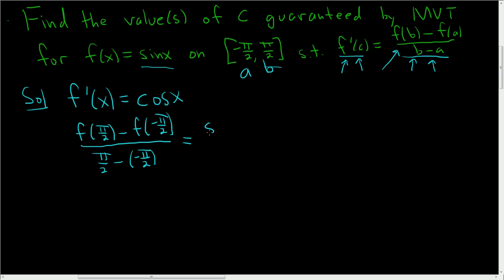So let's see, f of pi over 2 is the sine of pi over 2 and then minus sine of negative pi over 2. On the bottom here, we just have pi over 2 plus pi over 2, right? Two negatives, so that gives us pi.